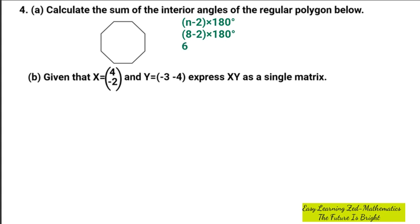Then 6 multiplied by 180 degrees. When you multiply that, it's going to give you 1080 degrees. So the sum of interior angles is 1080 degrees. Okay, let's do question 4b.